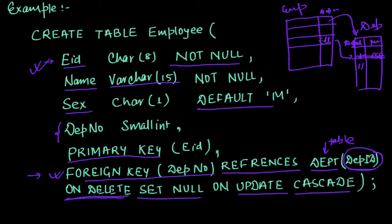So you can see ON DELETE SET NULL. If I am deleting this record, set this as null. And if I am updating this record, then cascade - that is, update this value also.